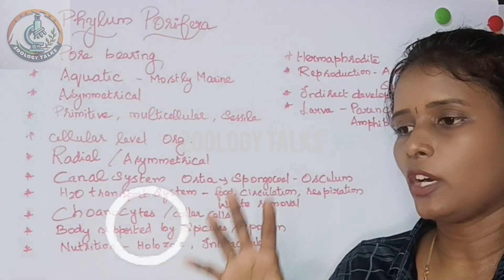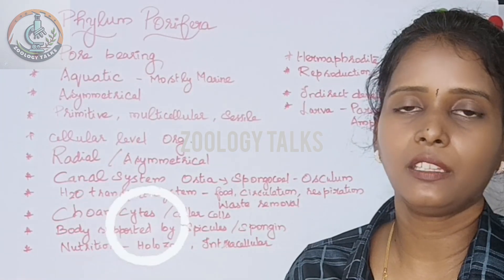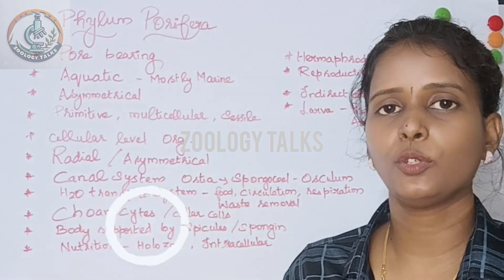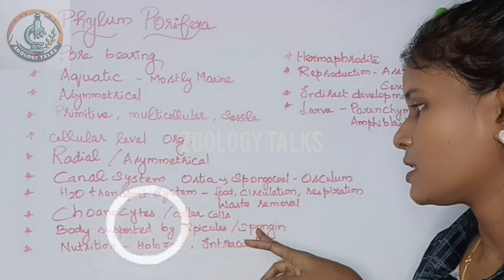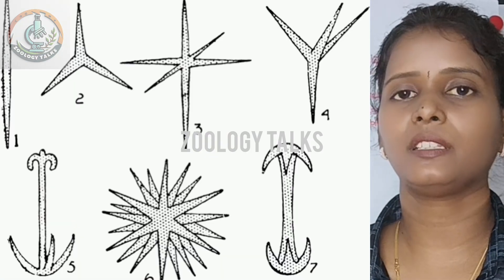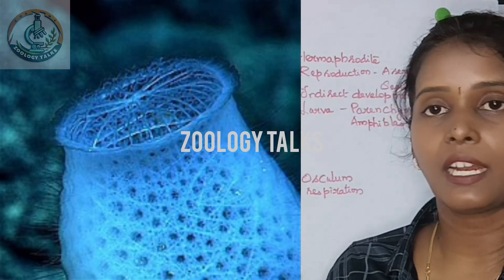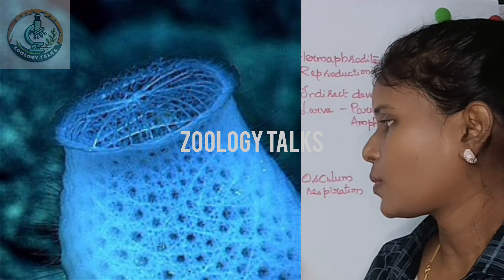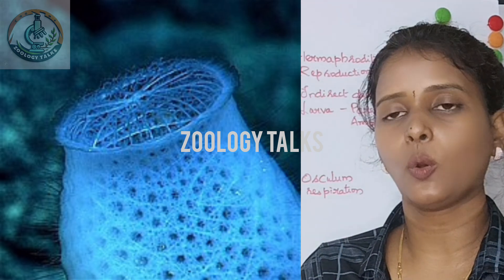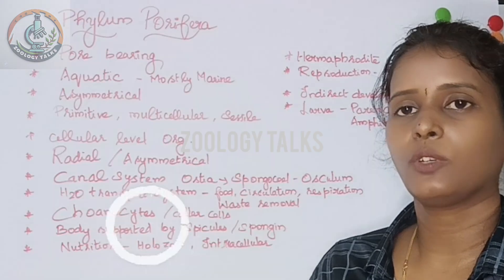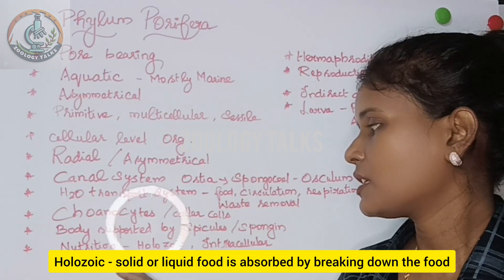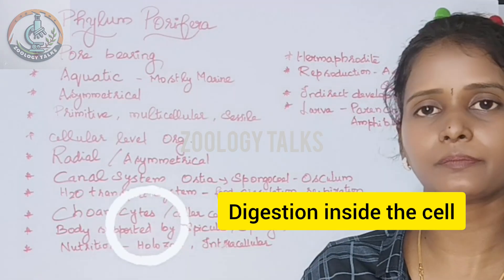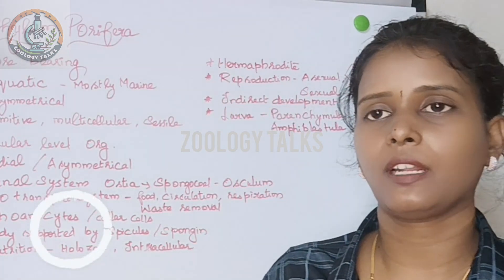Next is the body. Porifera is an invertebrate phylum at a primitive level. They have a body support system made of spicules. The spicules can be siliceous or calcareous — that is, made of silica or calcium carbonate. These spicules or spongin fibers form the skeletal support of the sponge body.